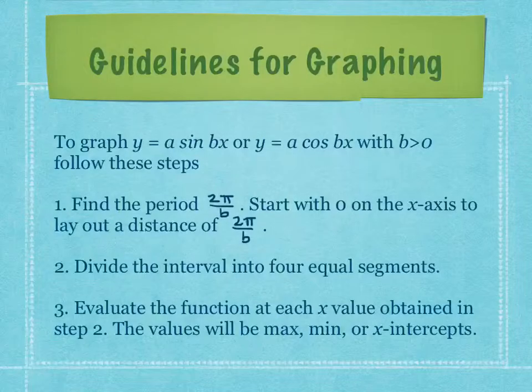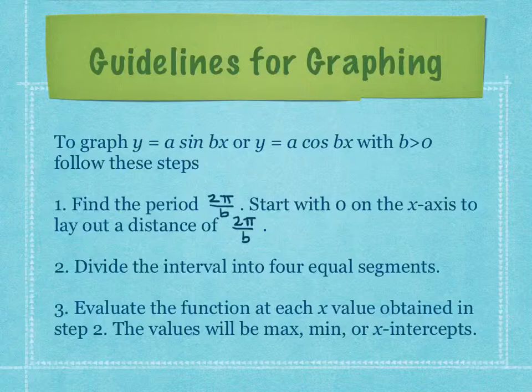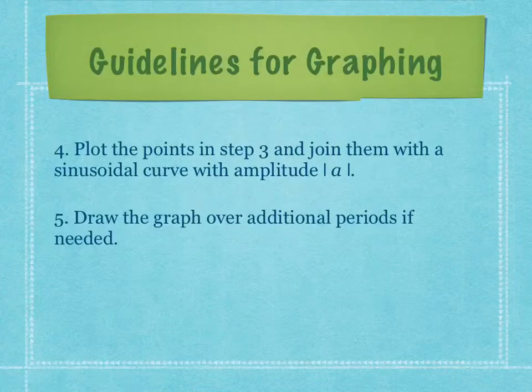Here are the guidelines for graphing: Step 1, find the period using 2π/b and lay out that distance. Step 2, divide the interval into four equal segments — half it and half again. Step 3, evaluate the function at each x-value from step 2; values will be maximums, minimums, or x-intercepts. Step 4, plot the points considering the amplitude. Step 5, draw the graph over additional periods if needed.